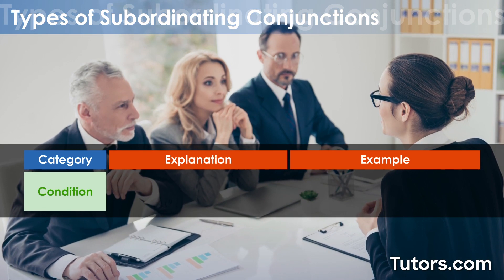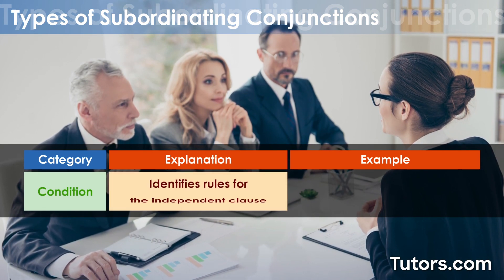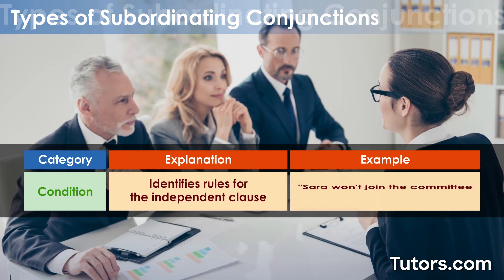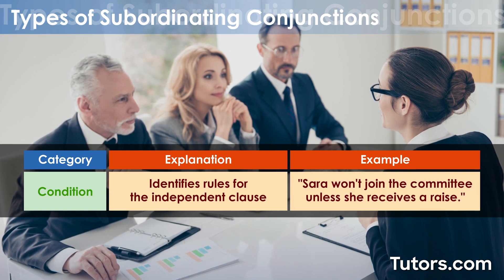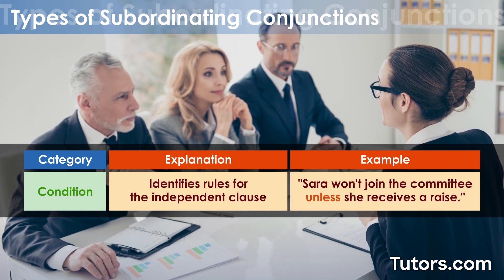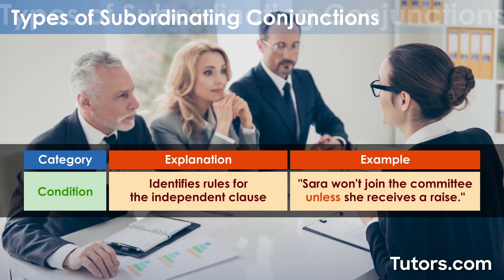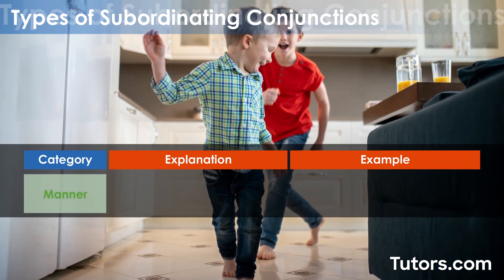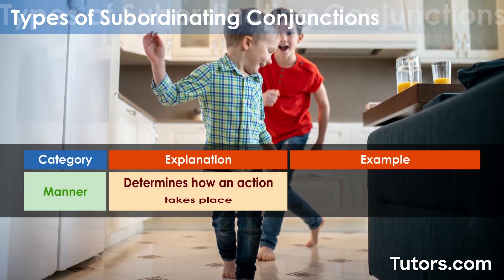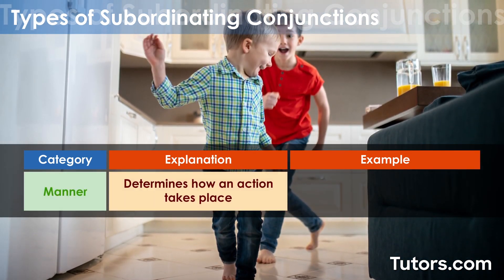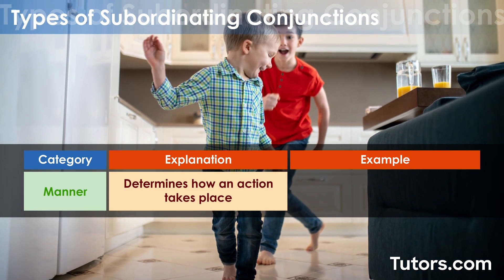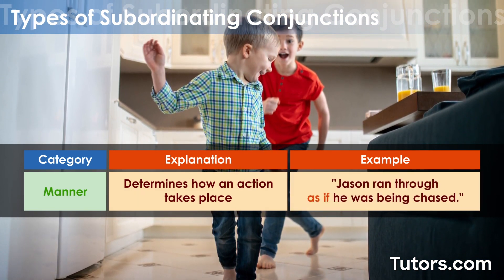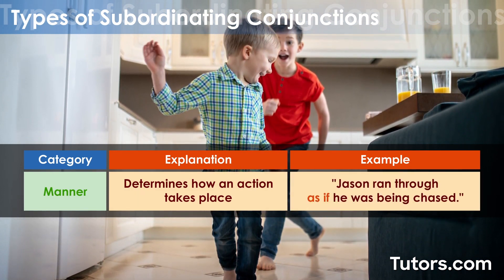Conditional subordinating conjunctions identify rules for the independent clause: 'Sarah won't join the committee unless she receives a raise.' Subordinating conjunctions of manner determine how an action takes place. For example, 'Jason ran through, as if he was being chased.'